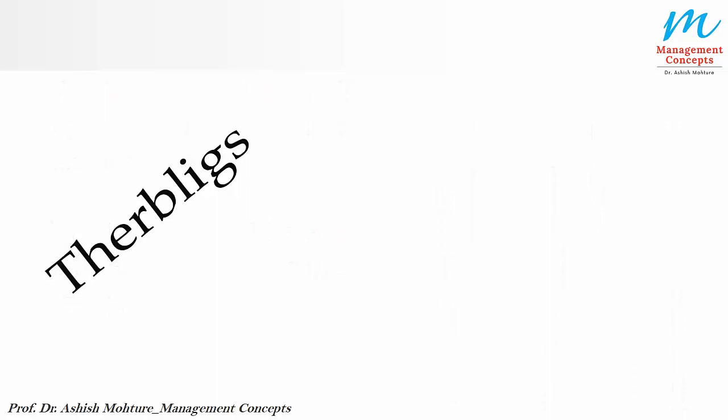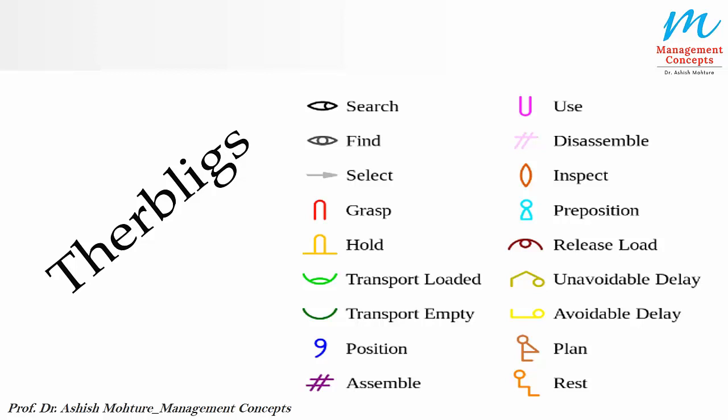The therbligs that Gilbreth identified after study are 18 different types of motions. Those motions are: search, find, select, grasp, hold, transport loaded, transport empty, position, assemble, use, disassemble, inspect, pre-position, release load, unavoidable delay, avoidable delay, plan, and rest. These were the 18 different motions Gilbreth identified in his studies.